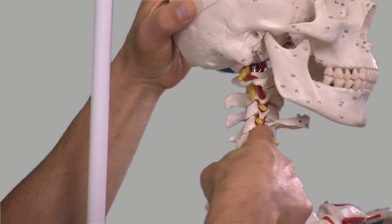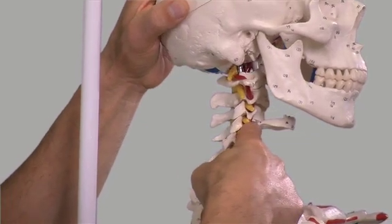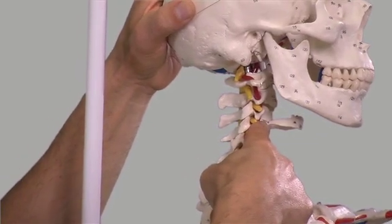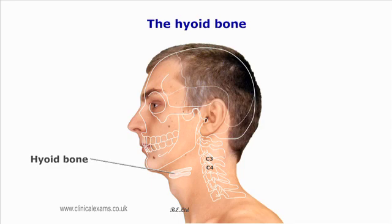The greater horns of the hyoid bone project towards and are in close proximity to the vertebral body of C3–C4.